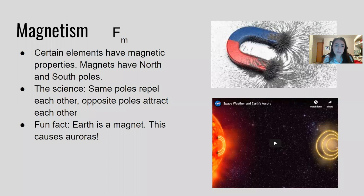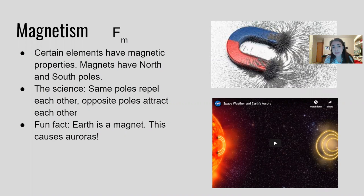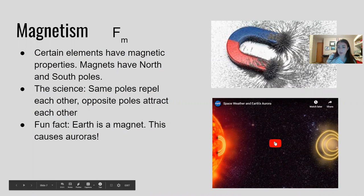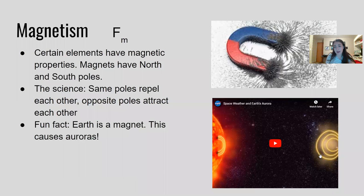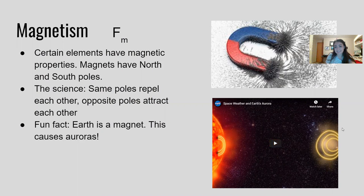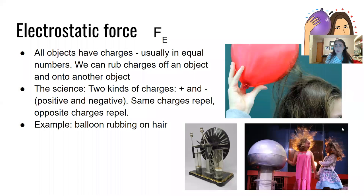Magnetism. Certain elements have magnetic properties. Magnets have north and south poles. The science behind magnetism is that same poles repel each other while opposite poles attract each other. For a fun fact, the Earth is a magnet and this causes auroras.